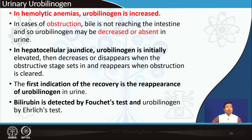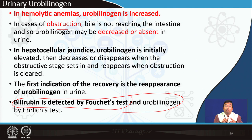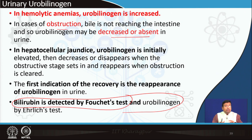Bilirubin is detected by Fouchet's test. Urobilinogen: it is formed when conjugated bilirubin goes into the gut and is converted by intestinal bacteria. In obstructive jaundice, when there is no conjugated bilirubin in gut, there will be no urobilinogen — urobilinogen is absent or decreased. In hepatocellular jaundice, in the initial phase when there is obstruction, there is no urobilinogen in urine, but ultimately when the edema clears and disease severity decreases, urobilinogen starts to appear in urine. The appearance of urobilinogen in urine in hepatitis is often regarded as the first sign of recovery.